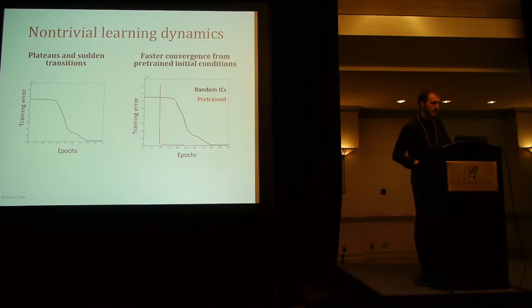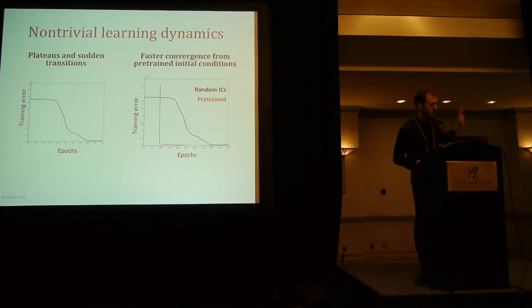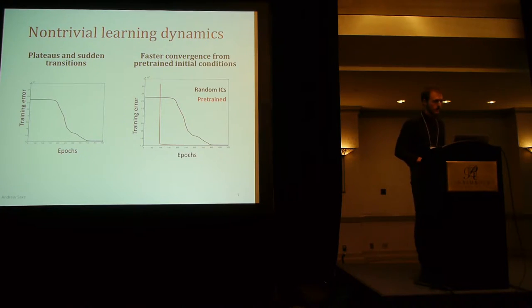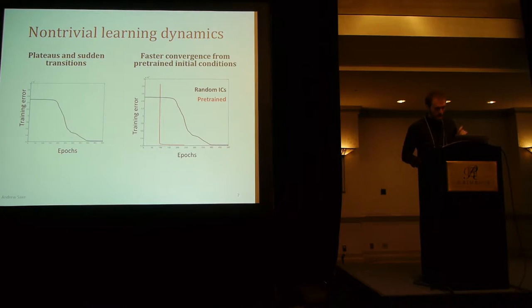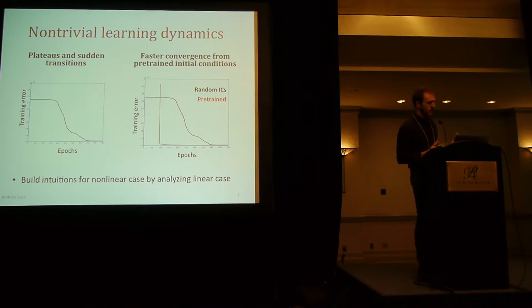Another phenomenon it shows is faster convergence from pre-trained initial conditions. Again, these are just linear networks, but the red curve is after doing auto-encoding pre-training. You can see that not only does learning go faster, it beats the random initial conditions even when counting for pre-training time. That is what I'm trying to understand — building intuition for the non-linear case by understanding where this behavior comes from in the linear case.